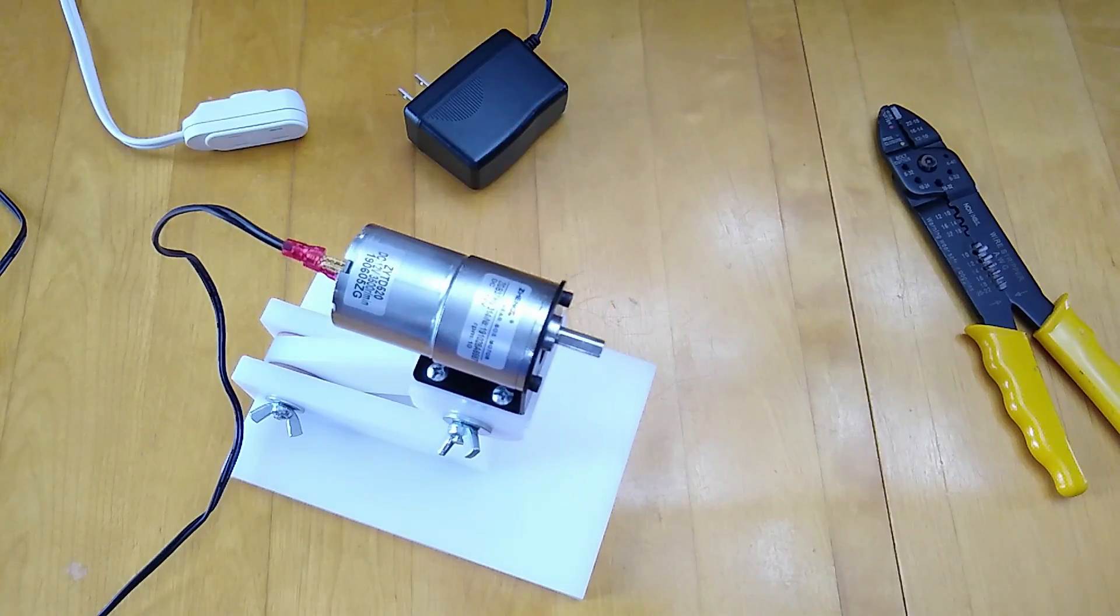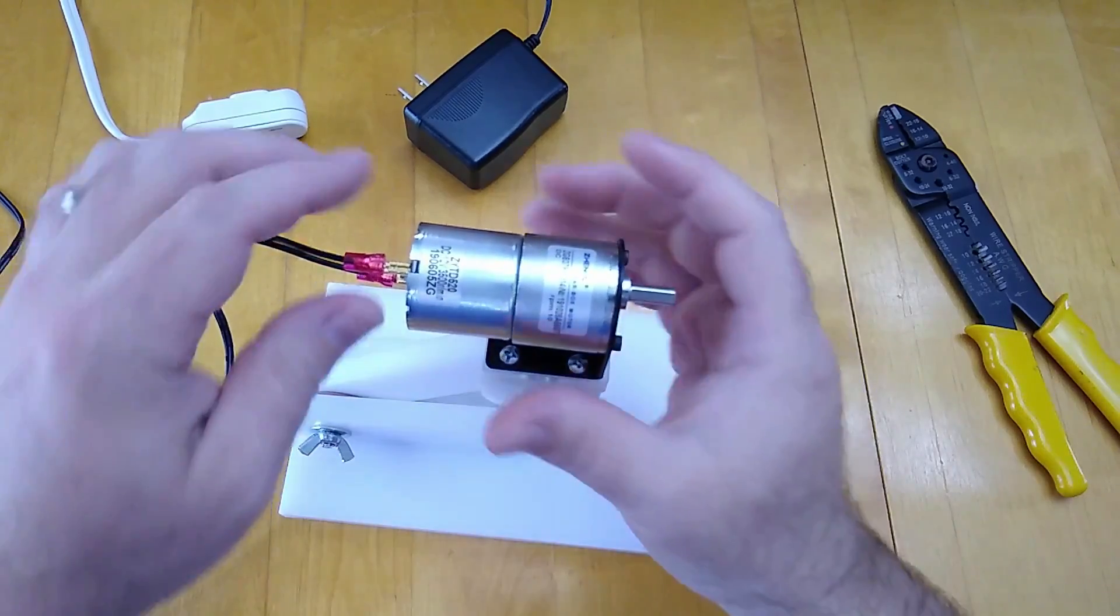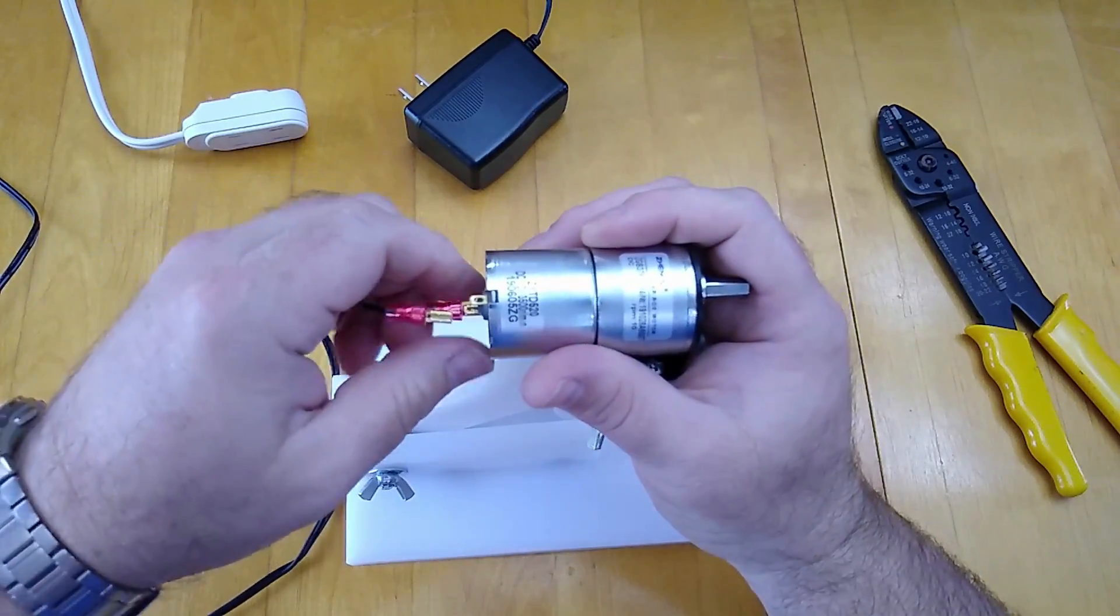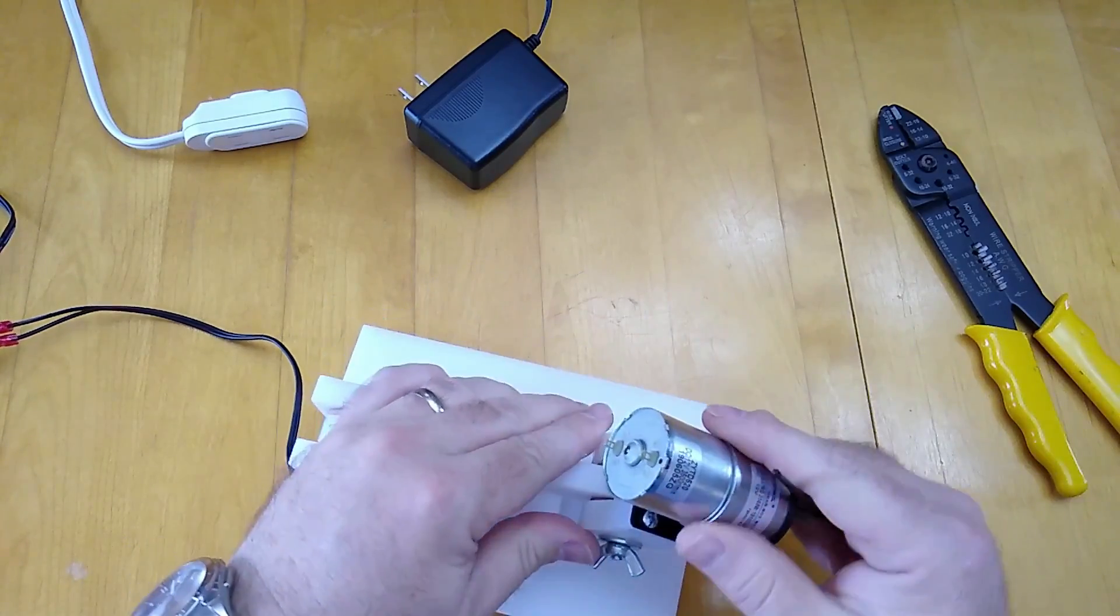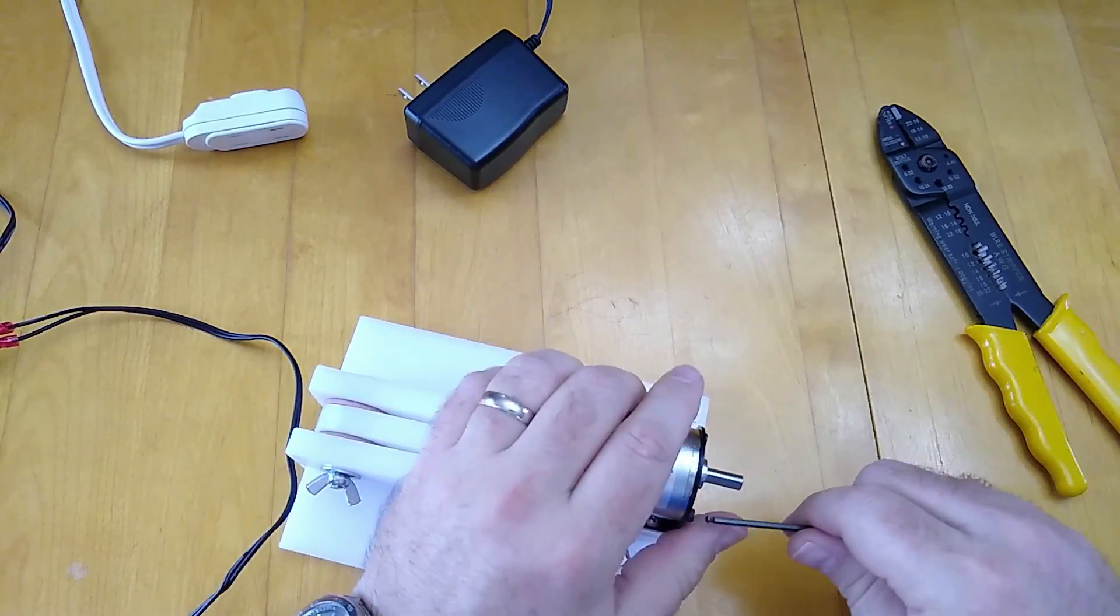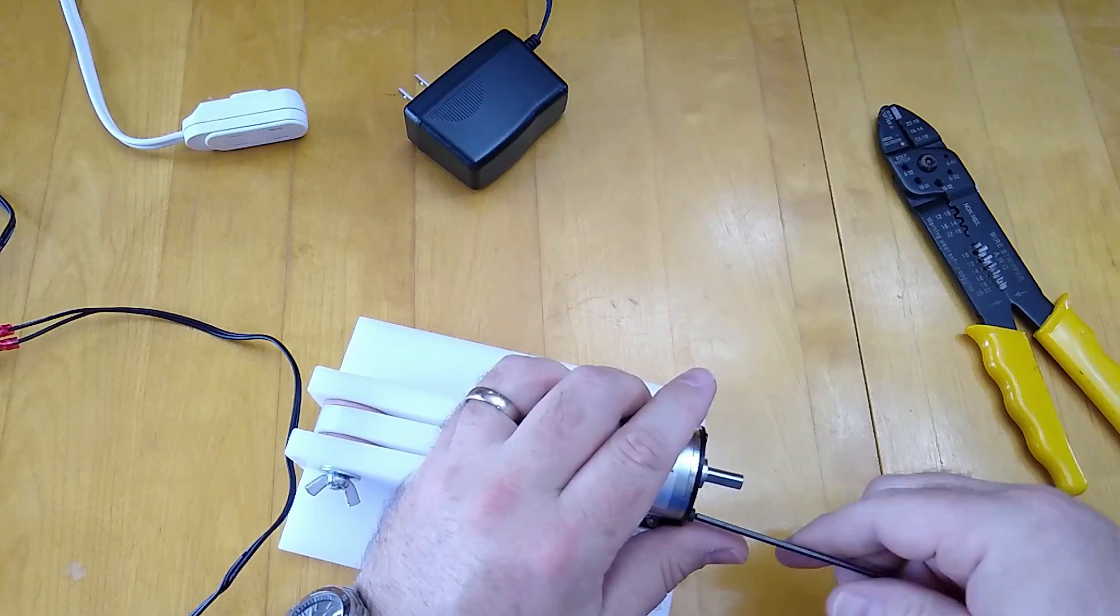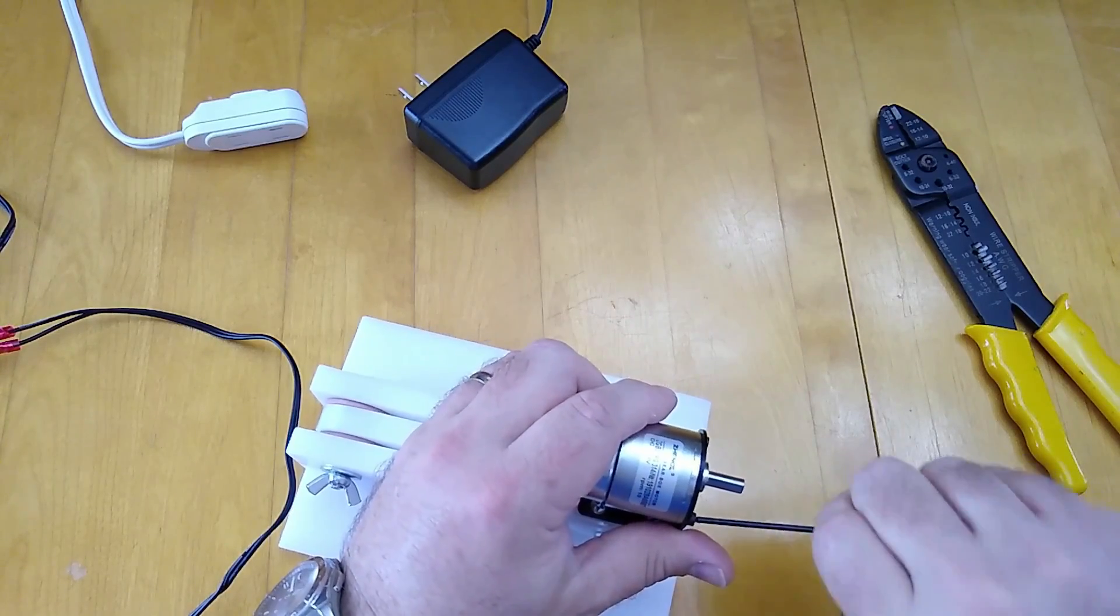I find the speed controller most handy when I'm doing wraps because I can slow it down to start out as I make sure that I get everything lined up, then I can increase the speed and carry on. So direct wire might be fine for most people for using a dryer motor or even possibly as an epoxy finishing motor setup.